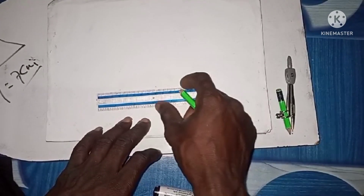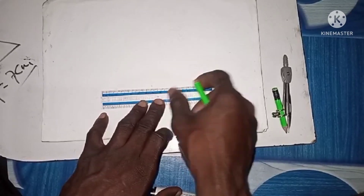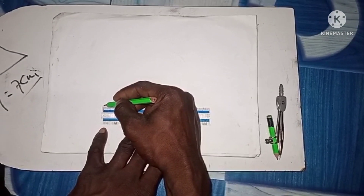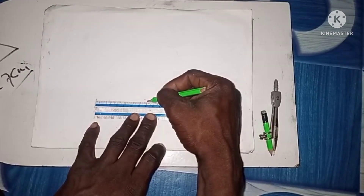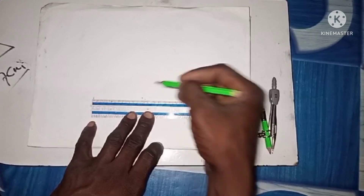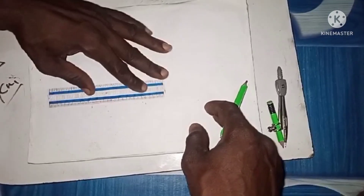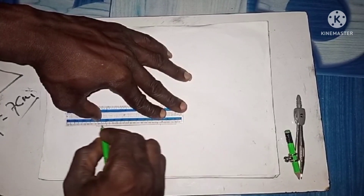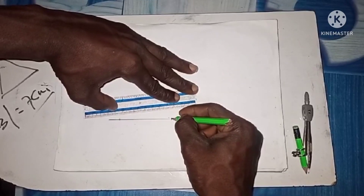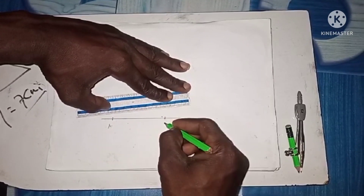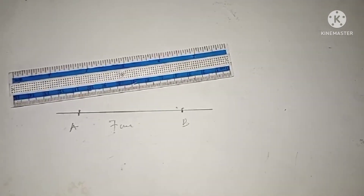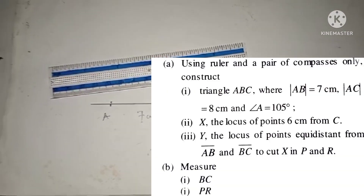I advise you to take that measurement somewhere close to the middle of your paper, because you don't know exactly which direction your construction will go. So here is the starting point A, and we are ending at seven centimeters — this is point B. From here to here is the length of AB: seven centimeters. That is our starting point.